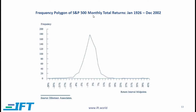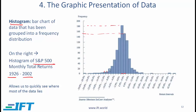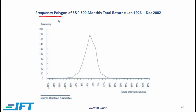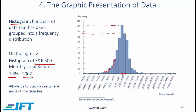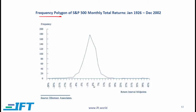A frequency polygon takes the midpoints of the histogram bars and connects those points. If you take the histogram and connect the midpoints for each bar, you have a frequency polygon. The x-axis shows the midpoint of each interval — so the 2% to 4% interval is represented by its midpoint of 3% — and the frequency is shown at that midpoint, for example 180 months at 3%.